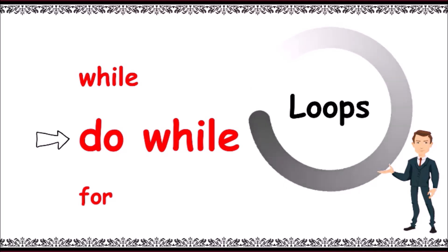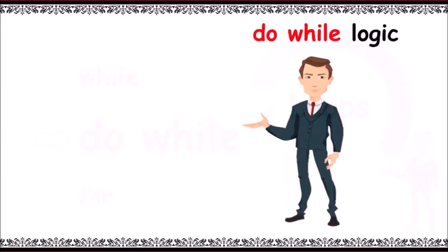Do while is an exit control loop. Here in do while, irrespective of the condition, the statements are first executed. Then the condition is evaluated.